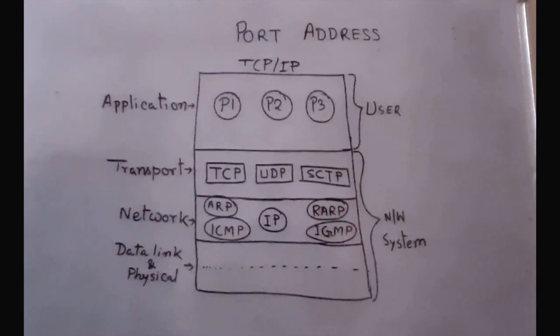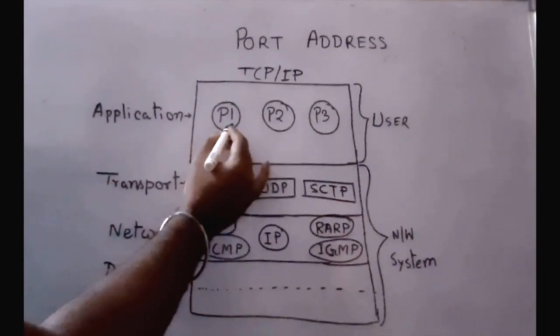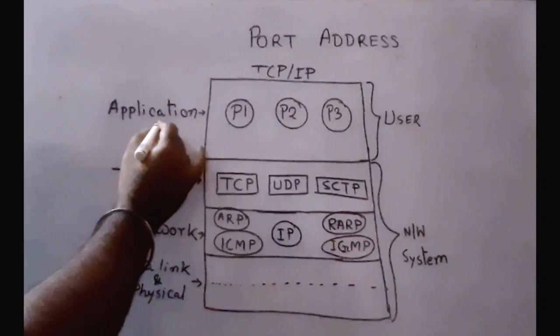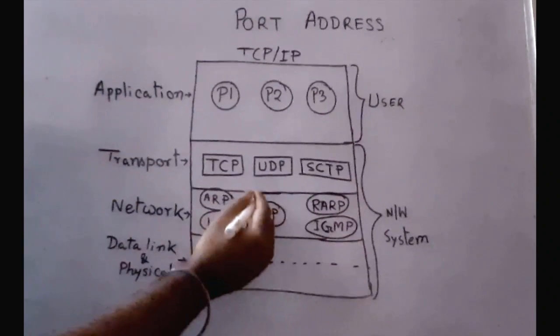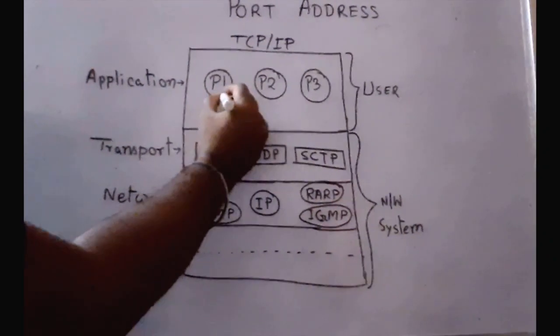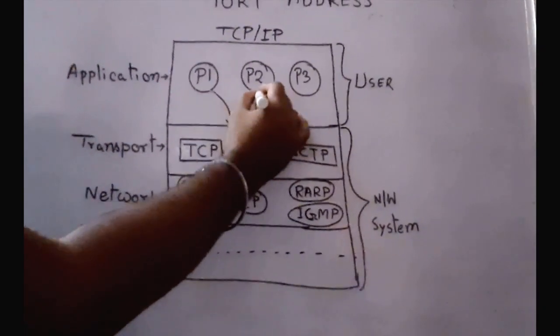Today we will discuss port addresses. As we know, user processes run in the application layer. They interact with the network system, so they send data to the transport layer and they receive data from the transport layer.